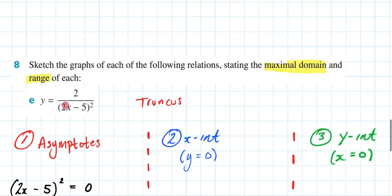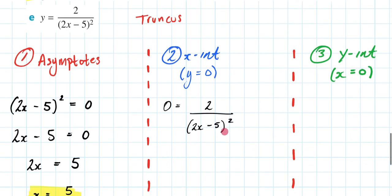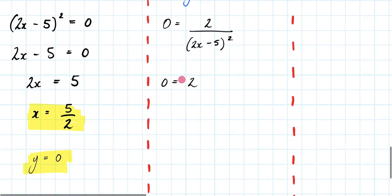Let's now find what my x-intercept will be. So we find the intercept by setting y equal to 0. So I'm going to get 0 equals 2 over 2x minus 5 squared. I'm going to times both sides by 2x minus 5 squared. So 2x minus 5 squared times 0 is just 0 equals 2. Well, that didn't work, did it? Because 2 does not equal 0. So therefore, I'm not going to have any x-intercepts.